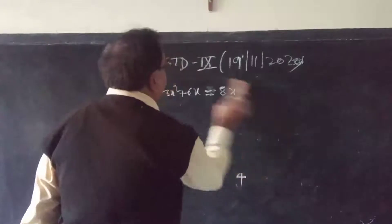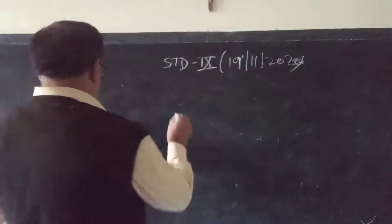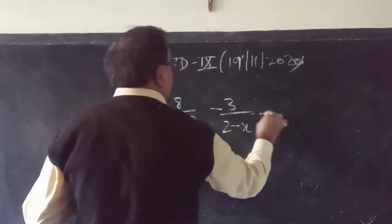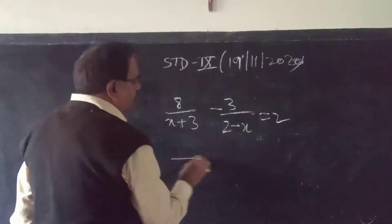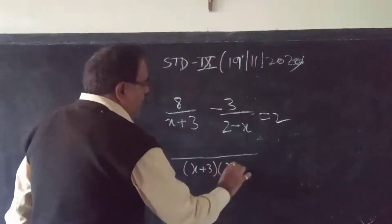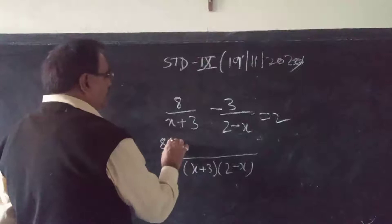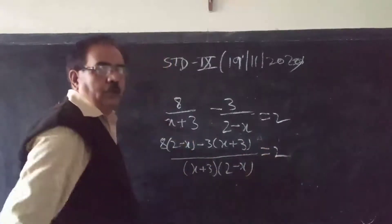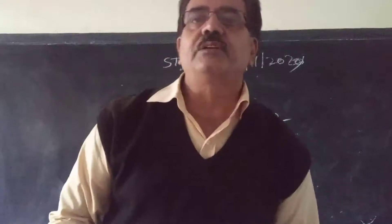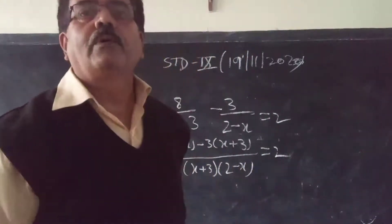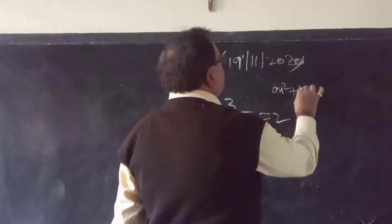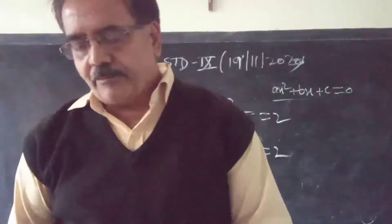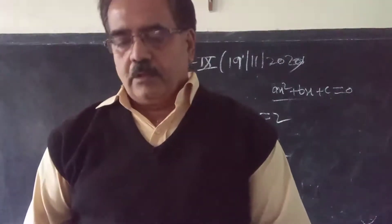The next question: 8/(x+3) − 3/(2−3x) = 2. How do you solve this? First of all, take the LCM, which will be (x+3)(2−3x). Then write [8(2−3x) − 3(x+3)] / [(x+3)(2−3x)] = 2. After that break the brackets, do cross-multiplication, bring it to standard form ax² + bx + c = 0, then split the middle term to get the value of x.